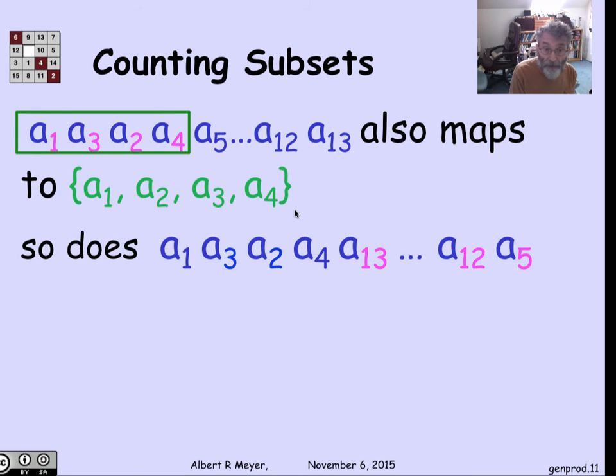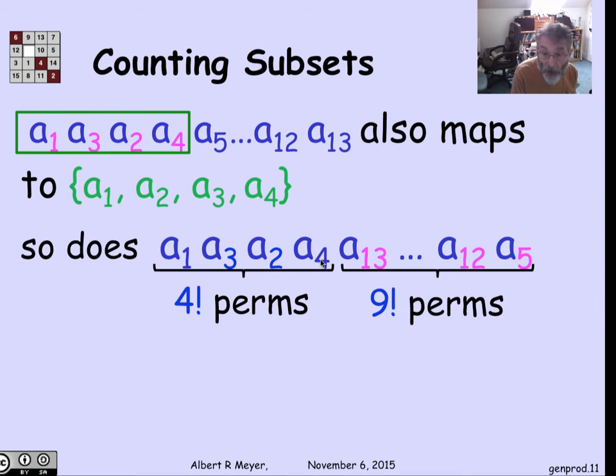Also, what else maps to the same set A1 through A4? I don't care the order in which the remaining elements occur. They don't have to be in order 5,6,7,8 through 13. They can be 13, 12, and end with 5. Any permutation of the remaining nine elements will also wind up hitting the same set, because the first four elements haven't changed. So there's 4 factorial ways of getting the first four elements in a permutation to hit the same set, and there's 9 factorial ways of permuting the last nine elements.